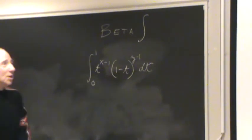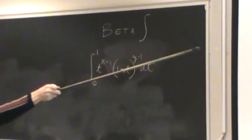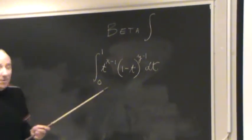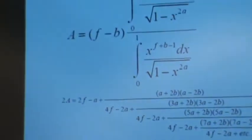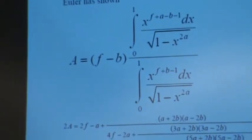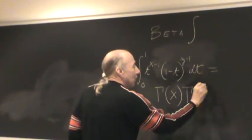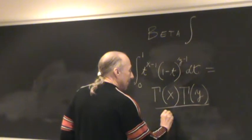So, by a simple change of variable, you can take each of those integrals and convert it into this. And this is equal to, here's where the gamma functions come from, gamma x, gamma y, over gamma of x plus y.